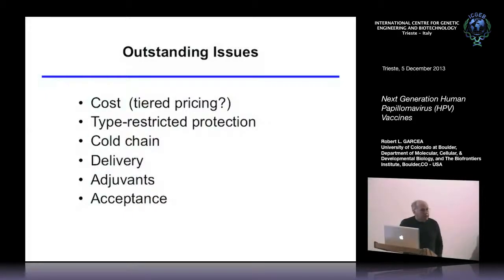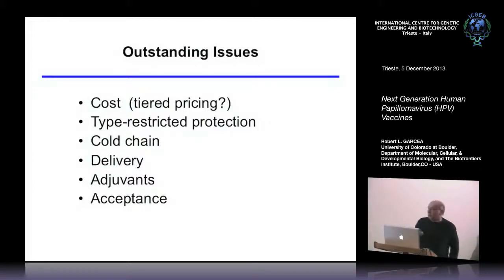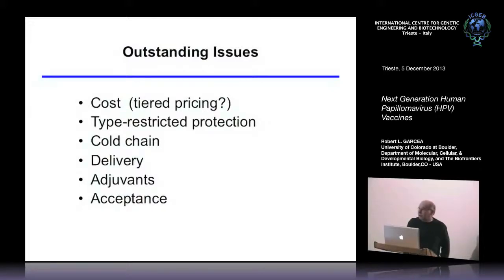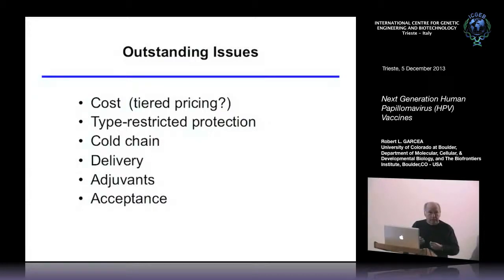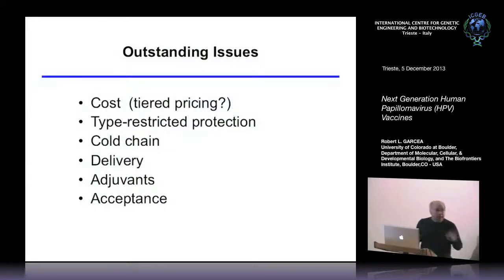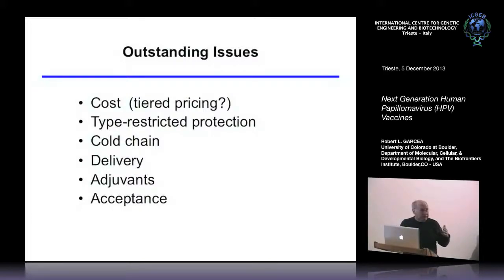Delivery: all of these are intramuscular. It would be really nice to get a different delivery system, since a syringe and needle costs about 25 cents. People have been working on inhalation deliveries. Adjuvants: we'd like really good ones — aluminum hydroxide is good, but we'd like that MPL adjuvant, which is patented by Merck, and there's a big industry making new adjuvants. Finally, acceptance — in the United States, some people think that giving this vaccine will make daughters more sexually promiscuous, and market penetration for Merck is only about 25 to 30 percent of the targeted market.